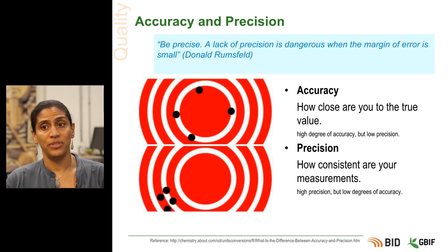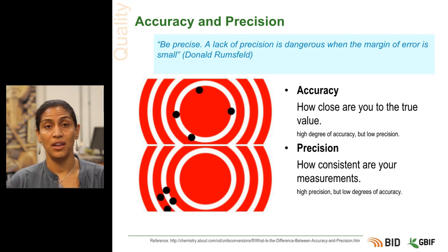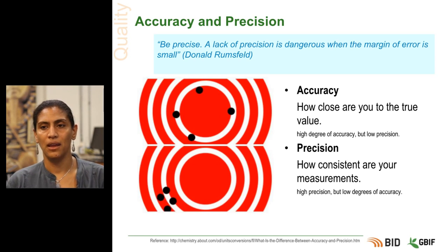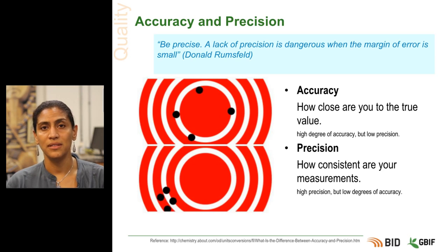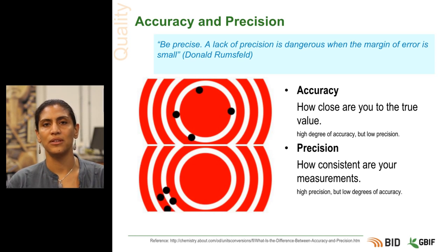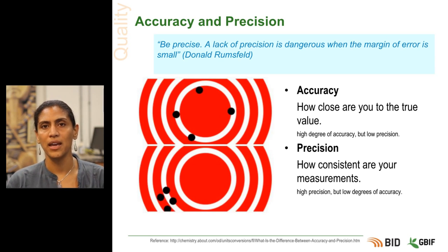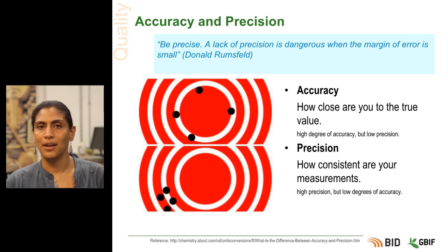Second, accuracy and precision — these are to do with how confident you are in your results. Accuracy is about how close you are to the true value. In the top example, the points are pretty close to the center of the target, indicating a high degree of accuracy. In the second example at the bottom, we look at precision, which is about how consistent your measurements are — not how close to the true value they are. Here the black points are clustered to the bottom left; they are very close together, so the user is very precise, however they have not been so accurate.